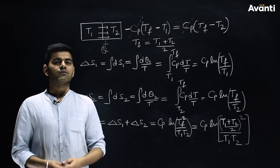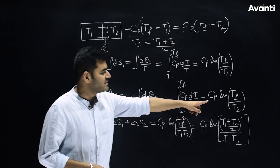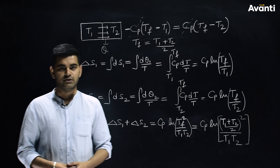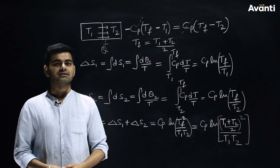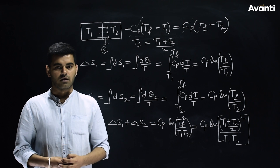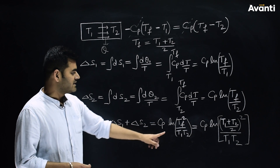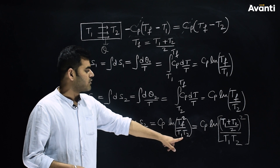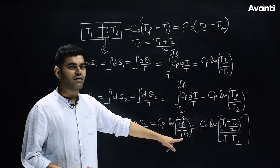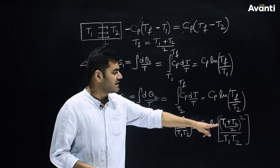Similarly, you can find ΔS2, which comes out to be Cp·ln(Tf / T2). Now, ΔS is the total change in entropy for both blocks, which comes out to be Cp·ln(Tf² / (T1·T2)).